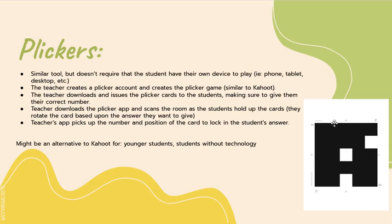When it is time to play, the question displays on the screen and the student holds up their card with the correct answer facing at the top. So Jane with card number two would hold it up with B at the top if she wants to choose B. If she wanted to choose A, she would rotate it so A is at the top. The teacher has the Plickers app downloaded and scans the room — the scanner picks up that card number two is Jane and she's showing letter B, so it records that Jane answered letter B.